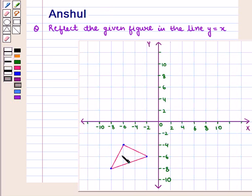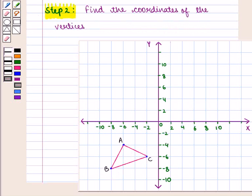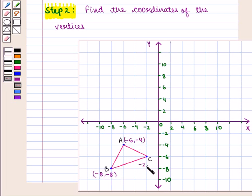Now in the question, we are given a triangle lying in the third quadrant, and we need to reflect this given triangle in the line Y equals X. We shall label the vertices of the triangle as A, B, and C. Next, we find the coordinates of the vertices: vertex A has coordinates (-6, -4), vertex B has coordinates (-8, -8), and vertex C has coordinates (-2, -6).